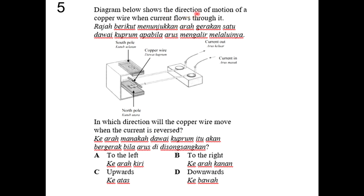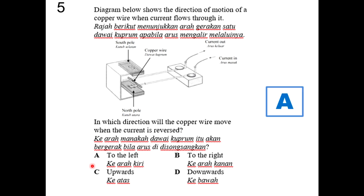Question 5: a copper wire carries current into the page with north-south magnets. Using Fleming's left-hand rule with current going in and north-south orientation, the original direction of the copper wire is to the right. When the current is reversed, the copper wire moves in the opposite direction — to the left. The answer is A: to the left.